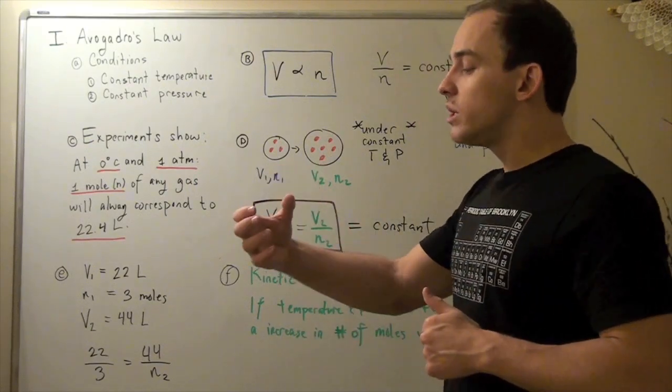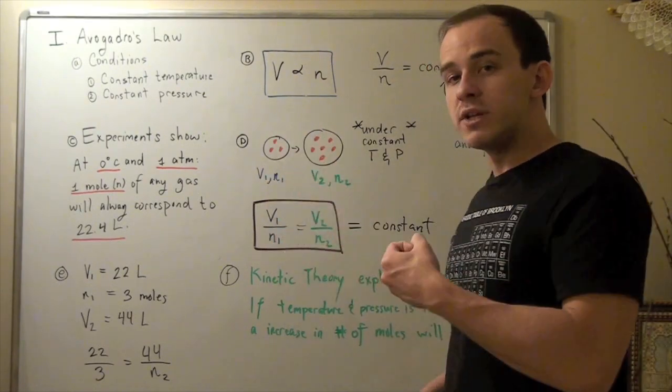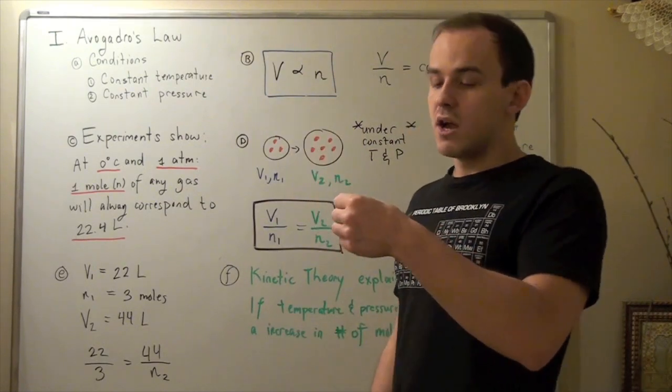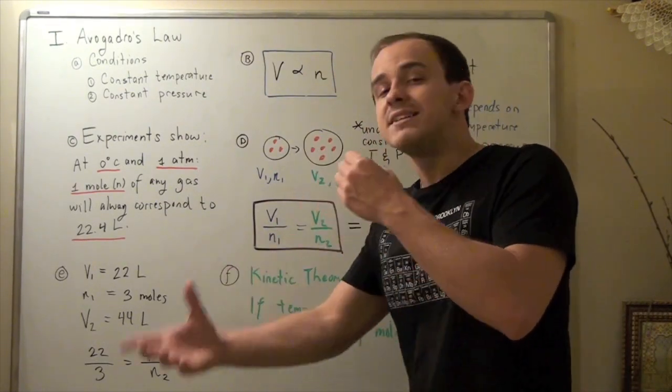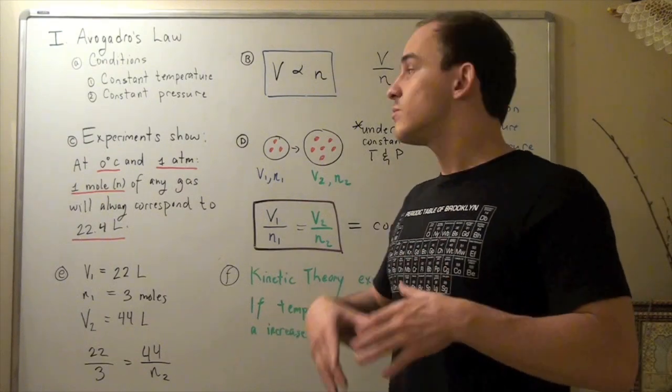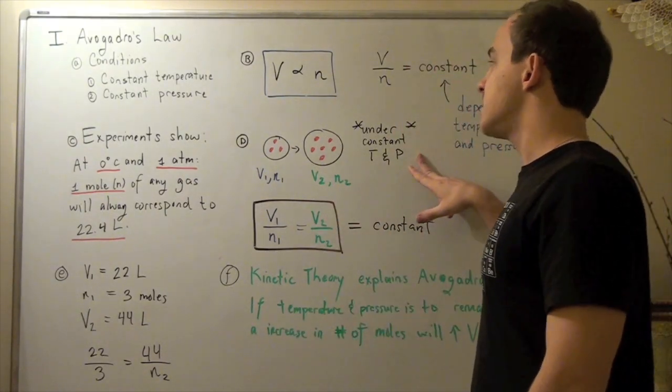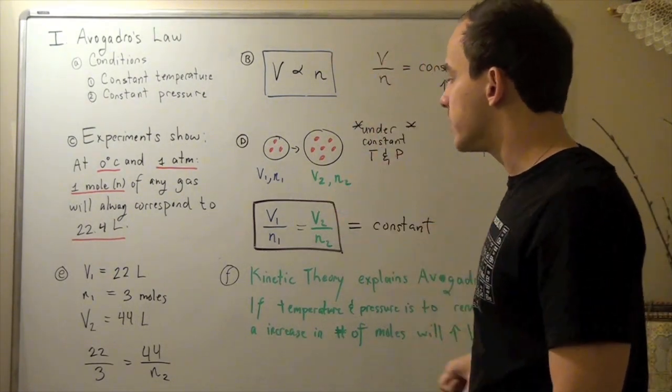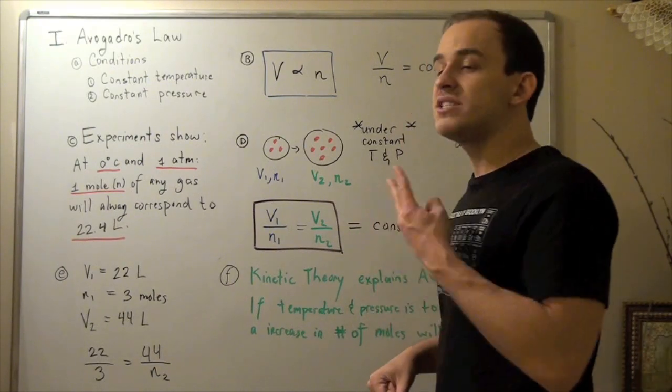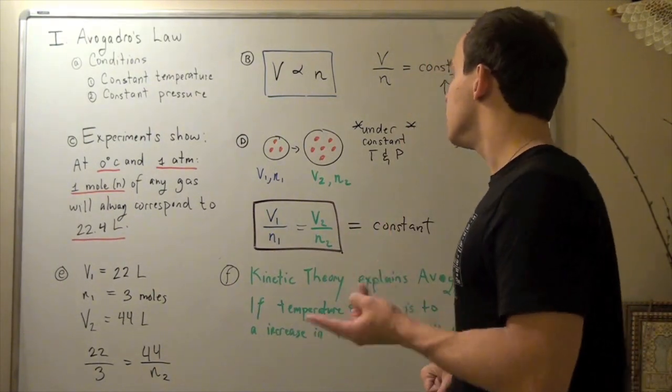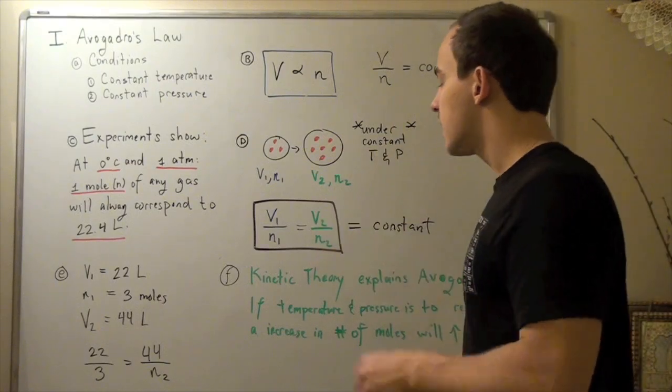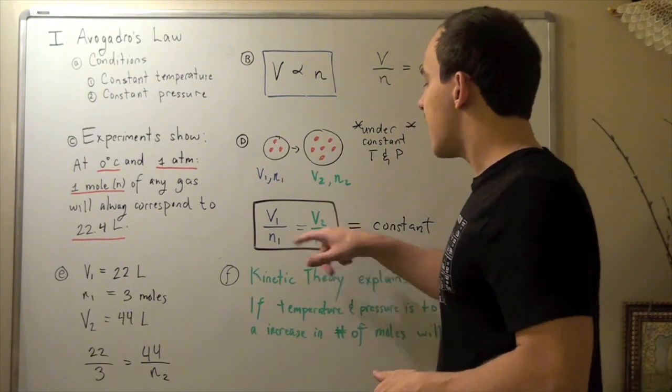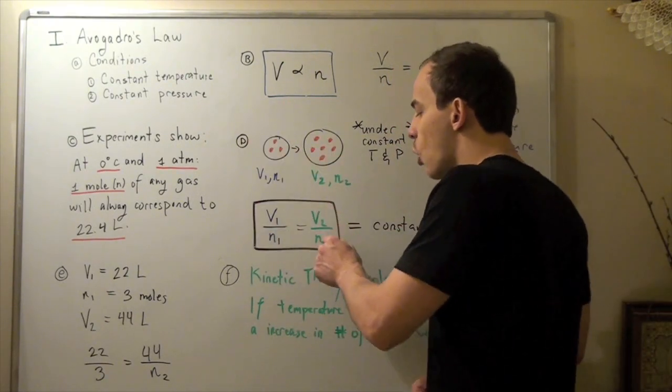Well suppose I take a balloon and I put a liter of water into my balloon. It's going to fill up to a certain volume. Suppose I put one more liter of water to my balloon. Well it's going to take up twice as much volume because we're assuming of course that temperature and pressure are the same. So our law, Avogadro's law, becomes the following. This law holds for two sets of different conditions under which temperature and pressure is held the same. So for one condition, for one volume and one mole, this equals to the second condition, V2 over N2.